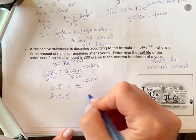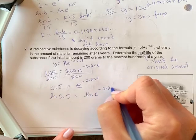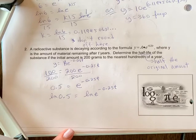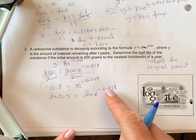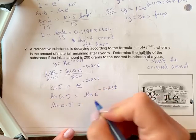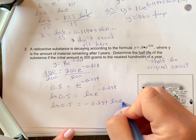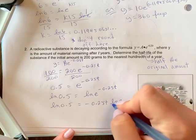So you get ln of 0.5 is equal to ln e to the negative 0.25t. And now you're going to want to apply the log theorem, so you're going to go ln 0.5 is equal to negative 0.25t times ln e. Remember that's going to be equivalent to one.